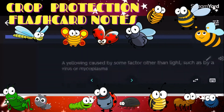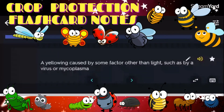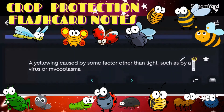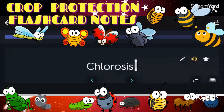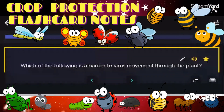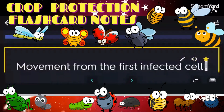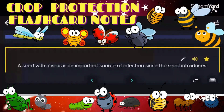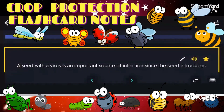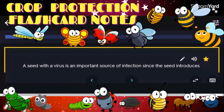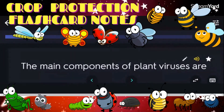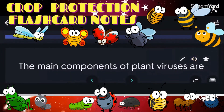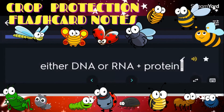A yellowing caused by some factor other than light, such as by a virus or mycoplasma: chlorosis. Which of the following is a barrier to virus movement through the plant? Movement from the first infected cell. A seed with a virus is an important source of infection since it introduces the virus into the crop at a very early stage. The main components of plant viruses are either DNA or RNA plus protein.